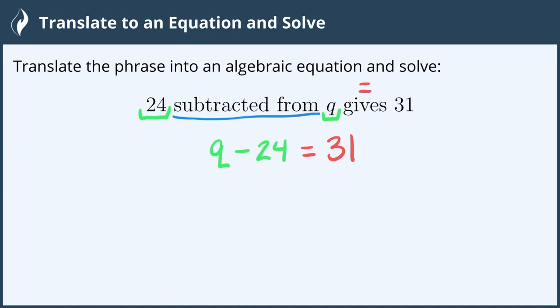Solving it for Q, we need to find all of the operations around Q and then do the opposite. This says Q minus 24. To do the opposite of that we need to add 24 to both sides to keep the equal sign balanced.